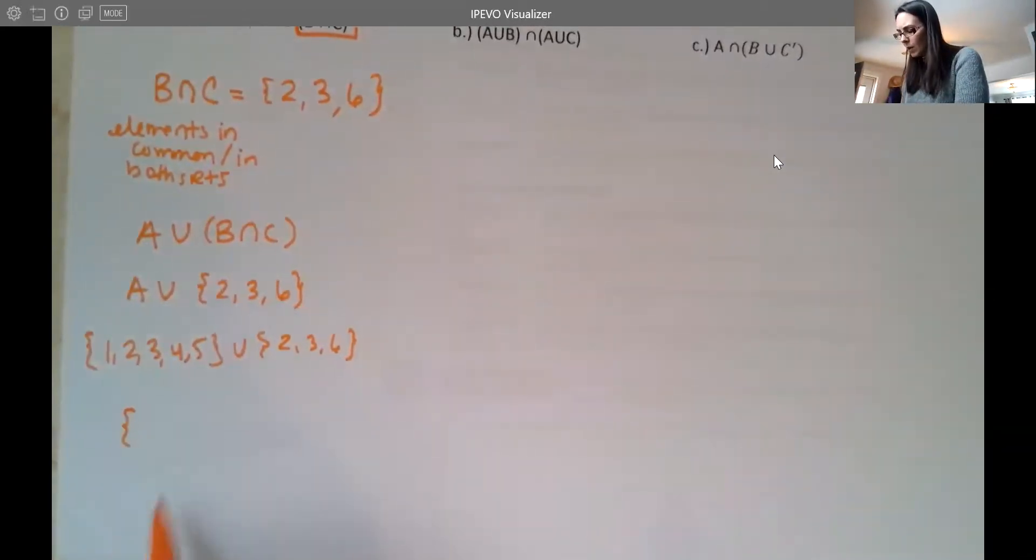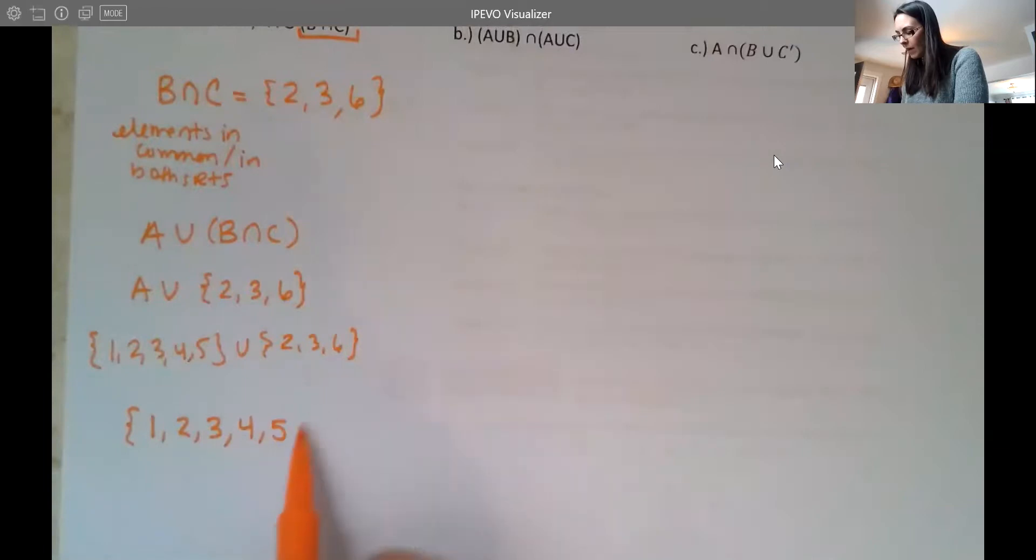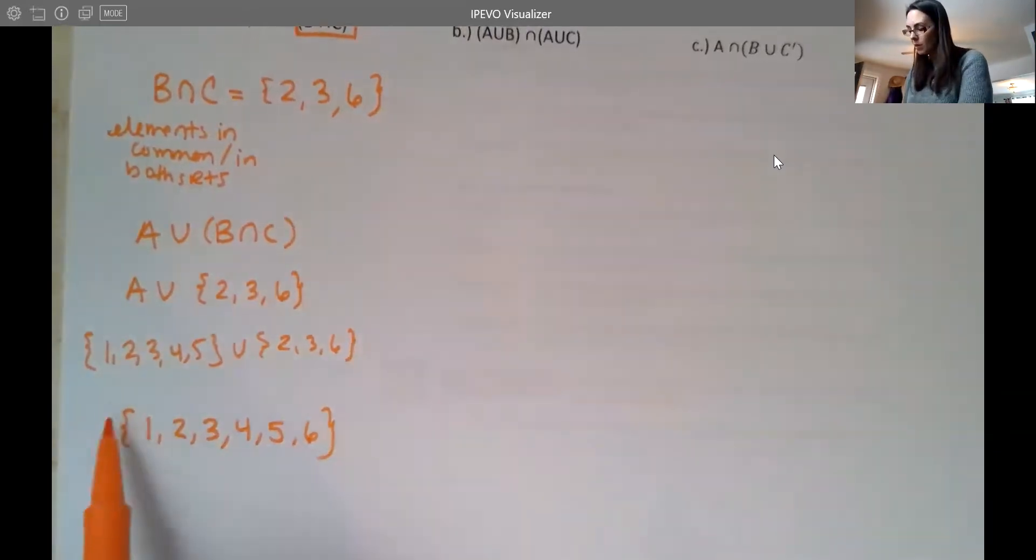So the union needs to combine these all together. I don't need to write repeats though. So I have number one, I have two, I have three, I have four, I have five, and then I have six. And again, I know that two and three also appear here, but if I have them already, I don't need to repeat. So that would be my answer.